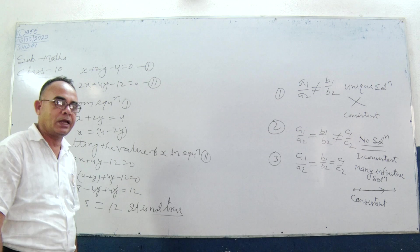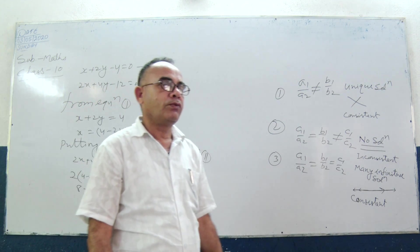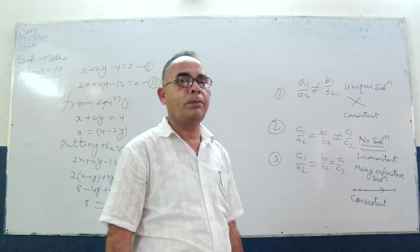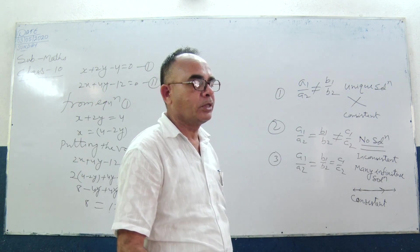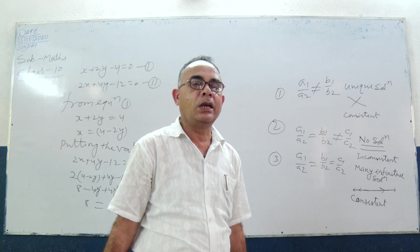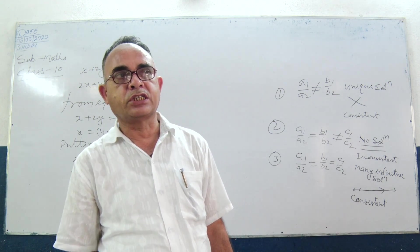That gives us 4x minus 12 equal to 0. The other methods are the elimination method and the cross-multiplication method.